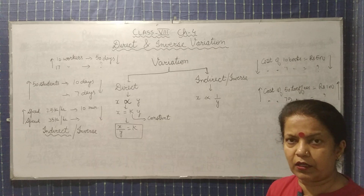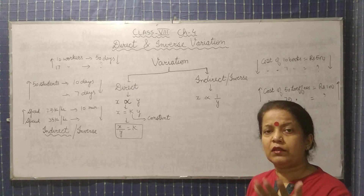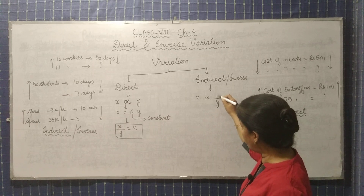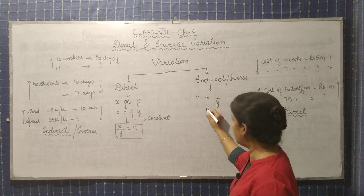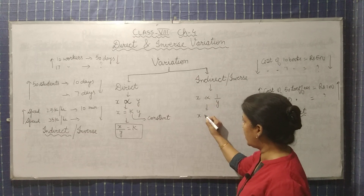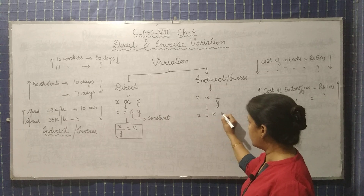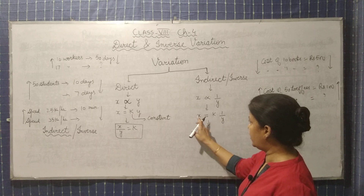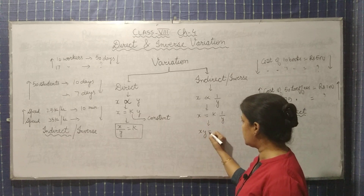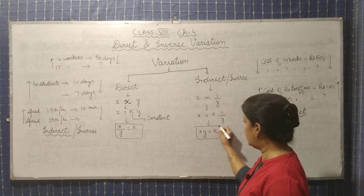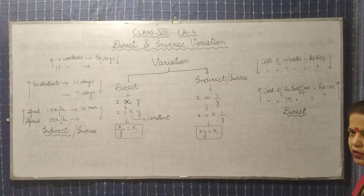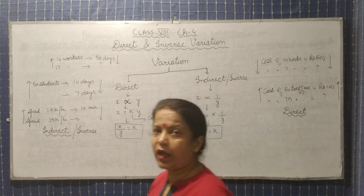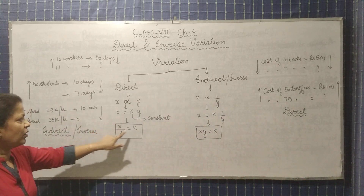In inverse variation, if one increases, the other decreases. Since they are inversely proportional, x is proportional to one upon y. To remove the inversely proportional sign, we put equal sign and introduce k, so x equals k into one upon y. Cross-multiplying, we get x into y equals k. So in inverse variation, x into y equals k.